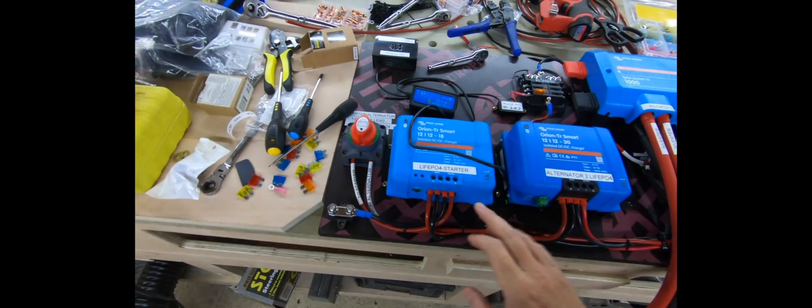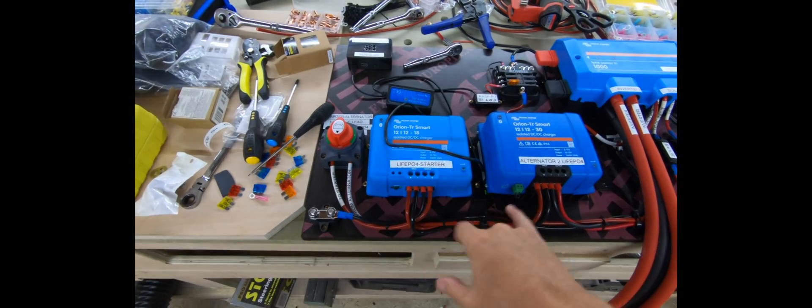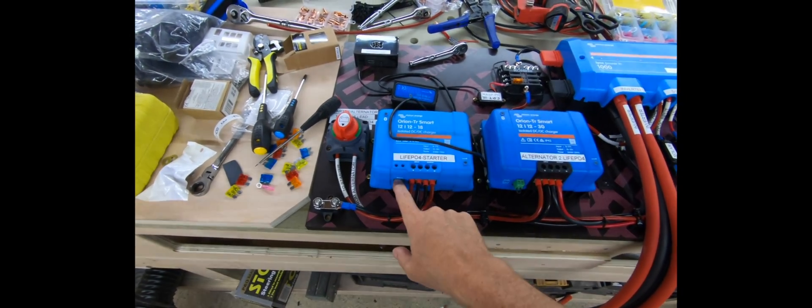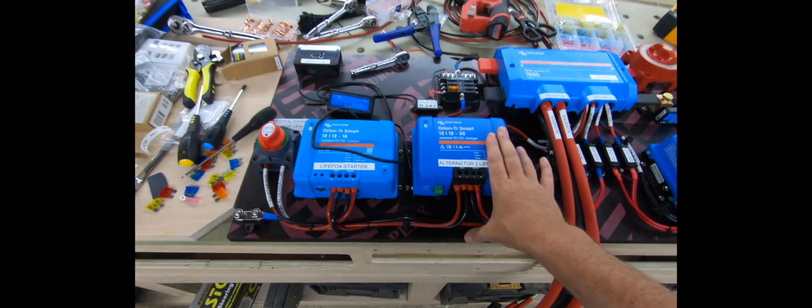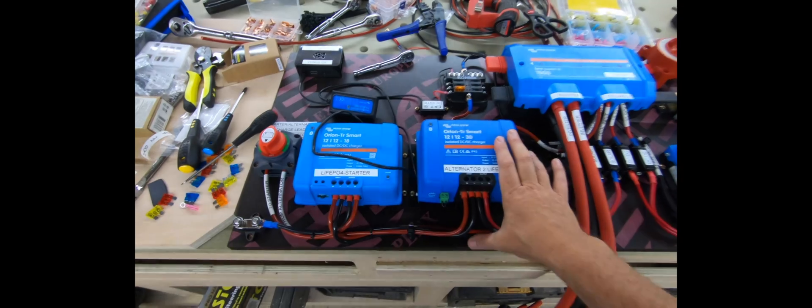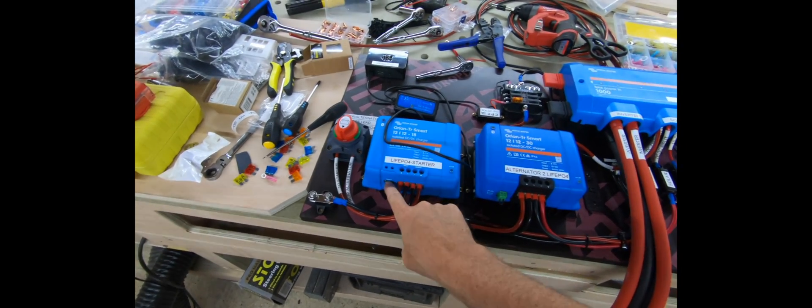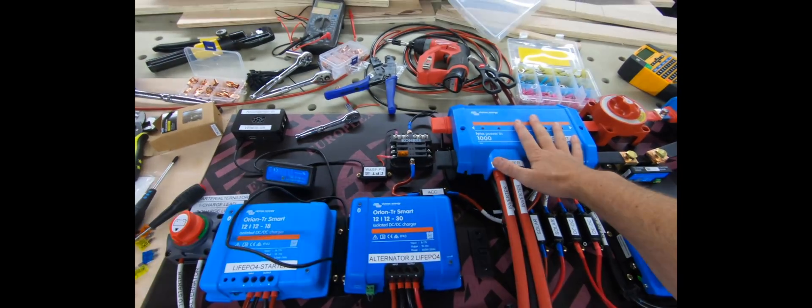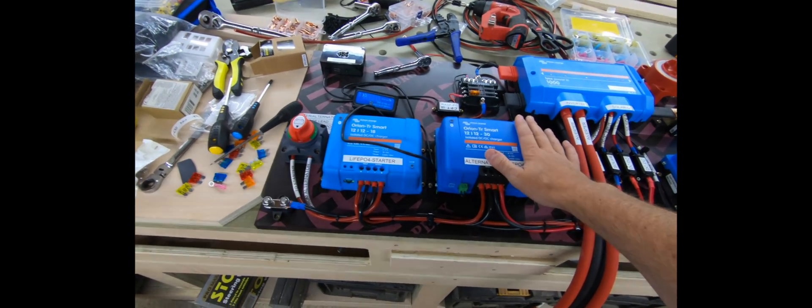So when the engine is running, the alternator will charge the lipos, but when the engine is not running, it will drop this relay out, it'll engage this one back in again. And that means that hopefully the solar brings these batteries up. And if we leave the boat for a length of time, which we are planning to do, then eventually this will top up the battery, the lead-acid battery for the starter.